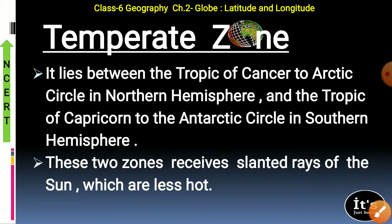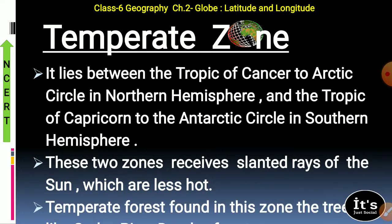These two zones receive slanted rays of the sun which are less hot. In the temperate zone, the sun's rays are not straight but slanted — तिर्ची — which is why the temperature here is lower and it is not very hot. Temperate forests are found in this zone and trees like pine are found in the temperate zone.